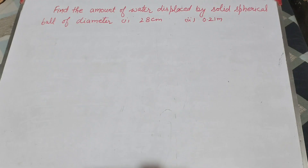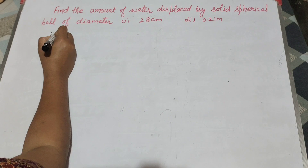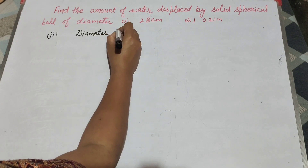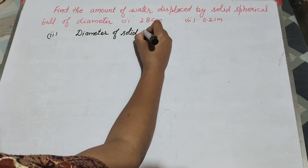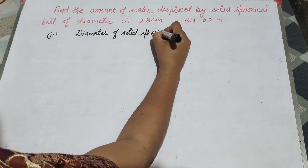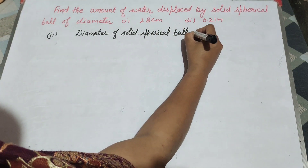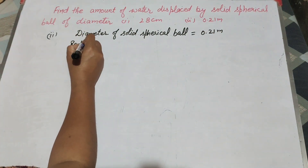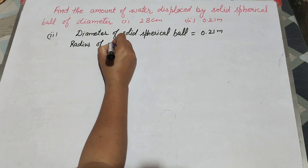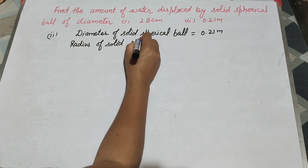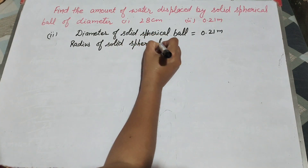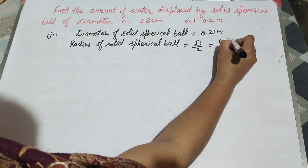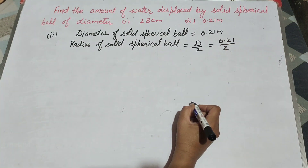Now we move to the second part. In the second part, given is the diameter of the solid spherical ball — it is equal to 0.21 meters. We find the radius of the solid spherical ball. It is diameter divided by 2, so 0.21 divided by 2.